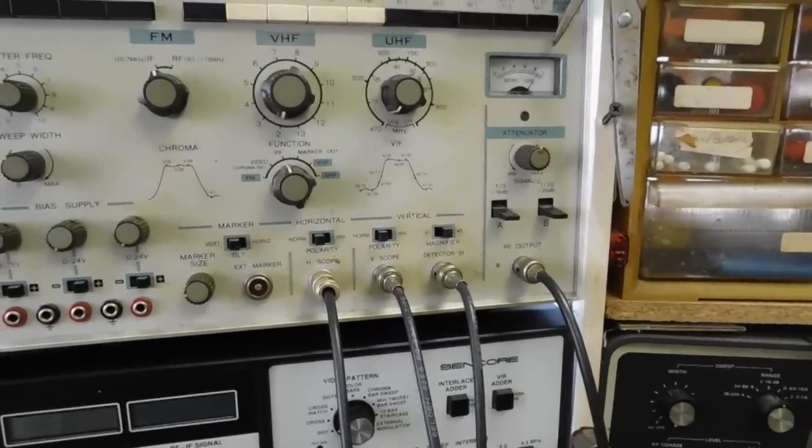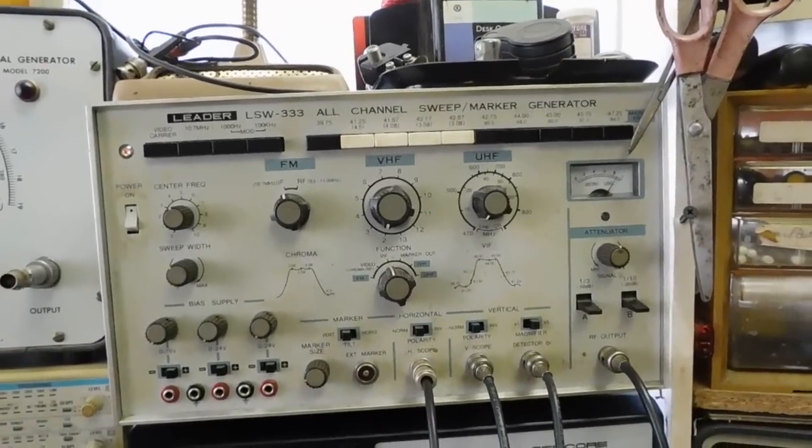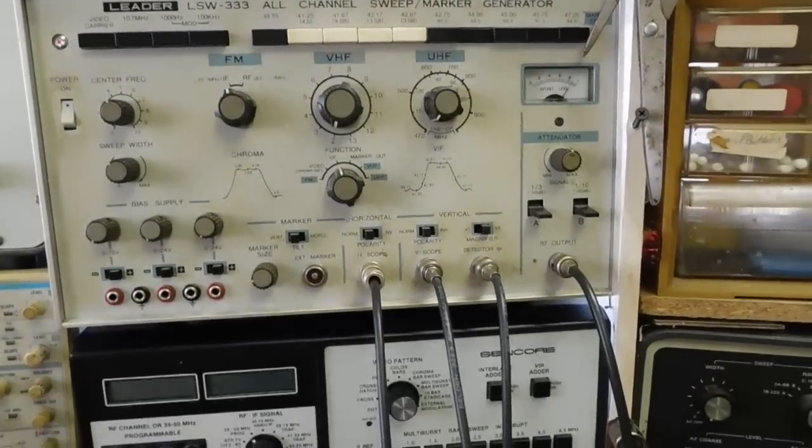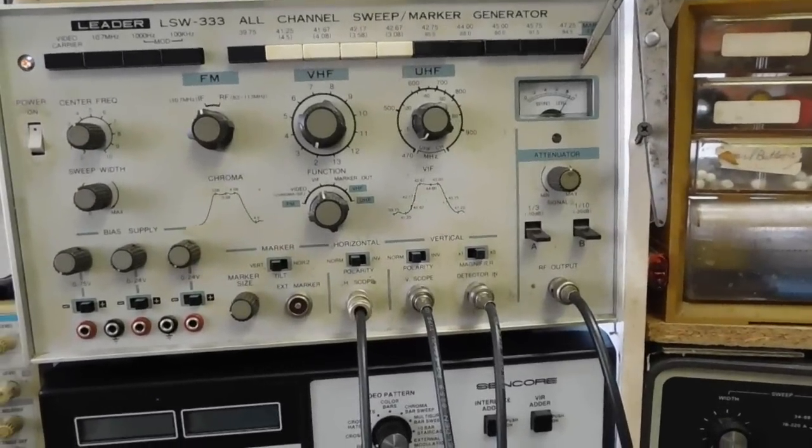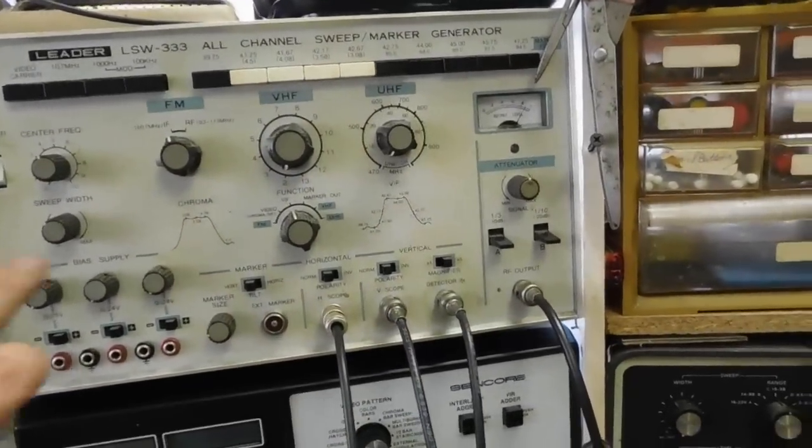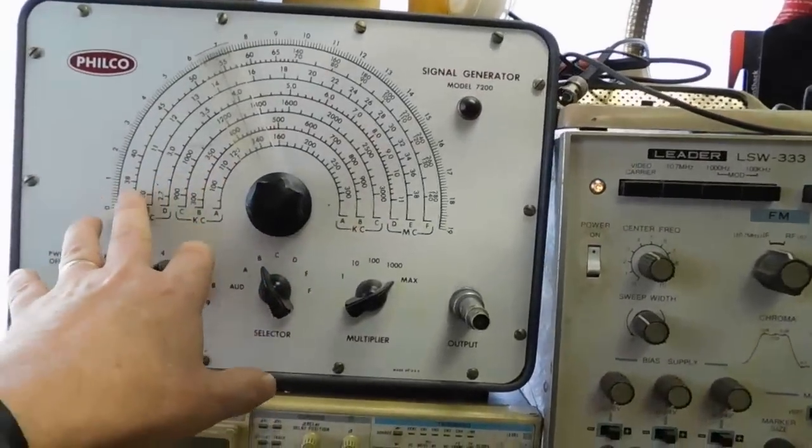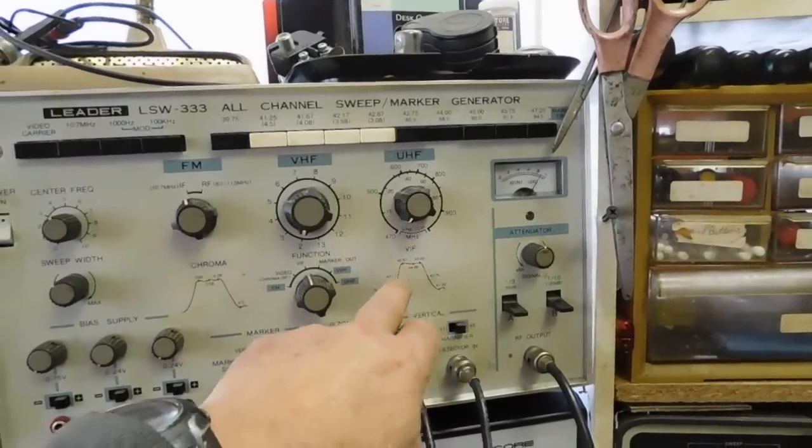So anyway, that's basically a general overview of this thing. You'll see it more when I get that Zenith TV done because I'm pretty sure it operates at the 44 megahertz center frequency. So I'll be using this and I'll probably couple it in with my signal generator because I'm sure that some of the markers may not be on here preset.